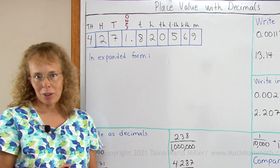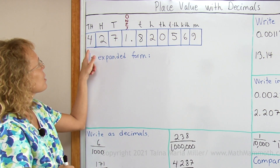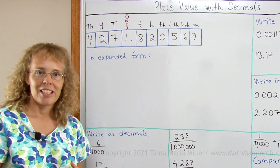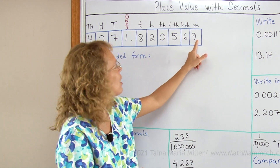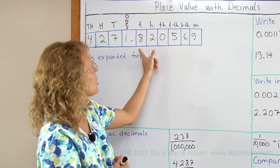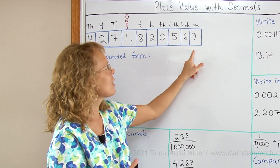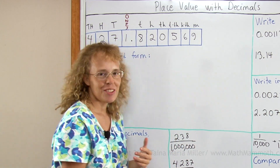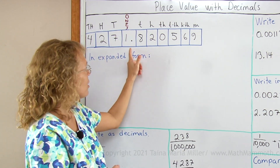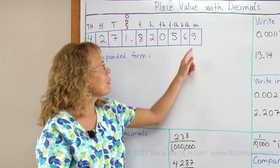Here I have a very long number, and let's say that I wanted to read it. It would be 4,271 — and then the decimal part. To read it I would have to check what is this last, smallest place value here. It is millionths. And then I would read this whole thing as a whole number and say millionths. So we have here 820,569 millionths. The other way to say it is just reading the digits like 4,271.820569, and it indeed has millionths here.